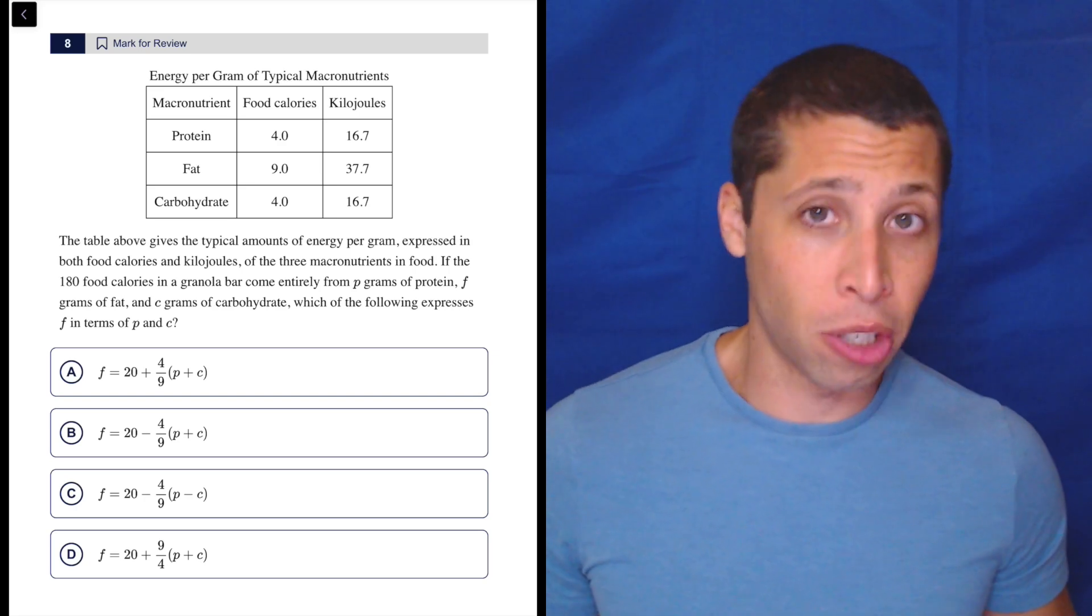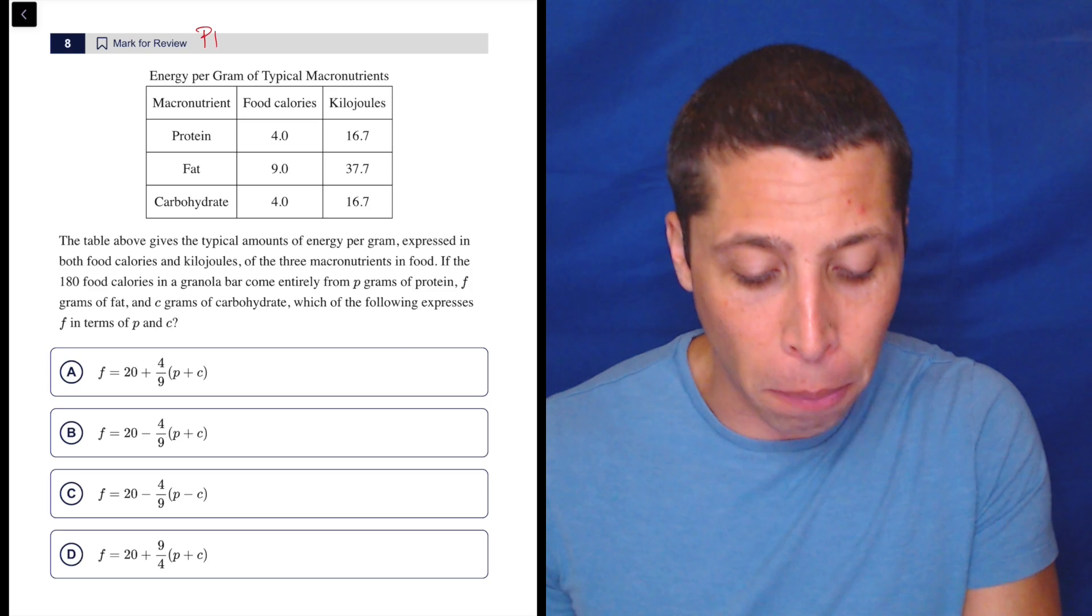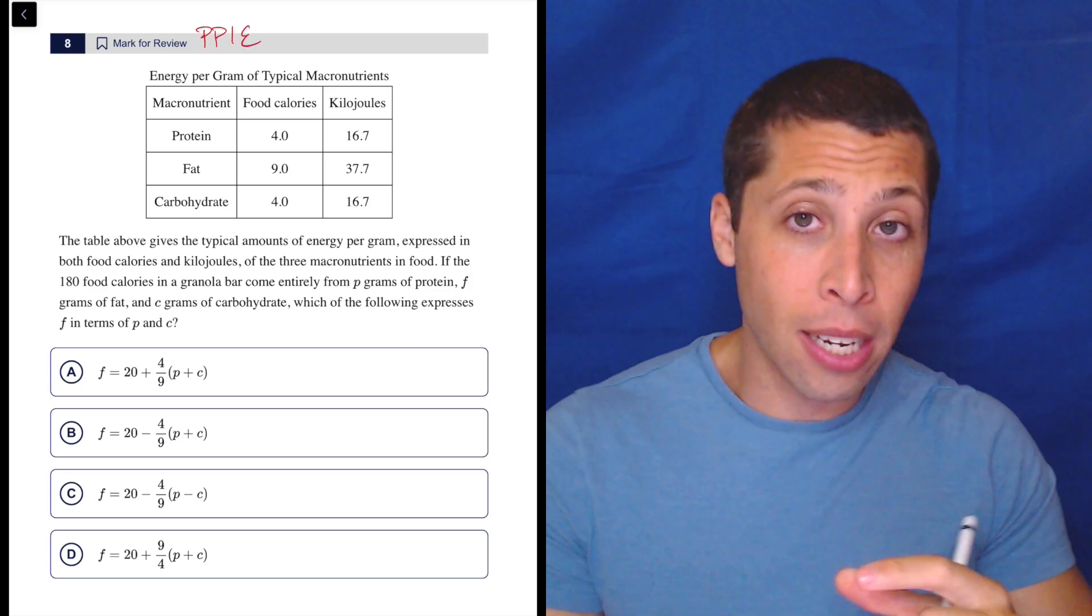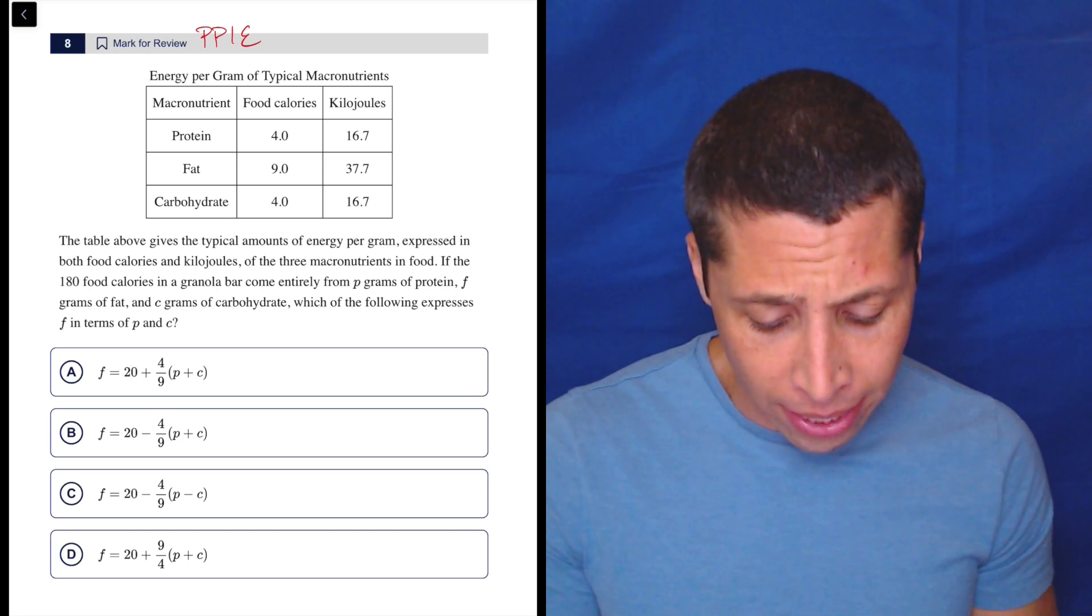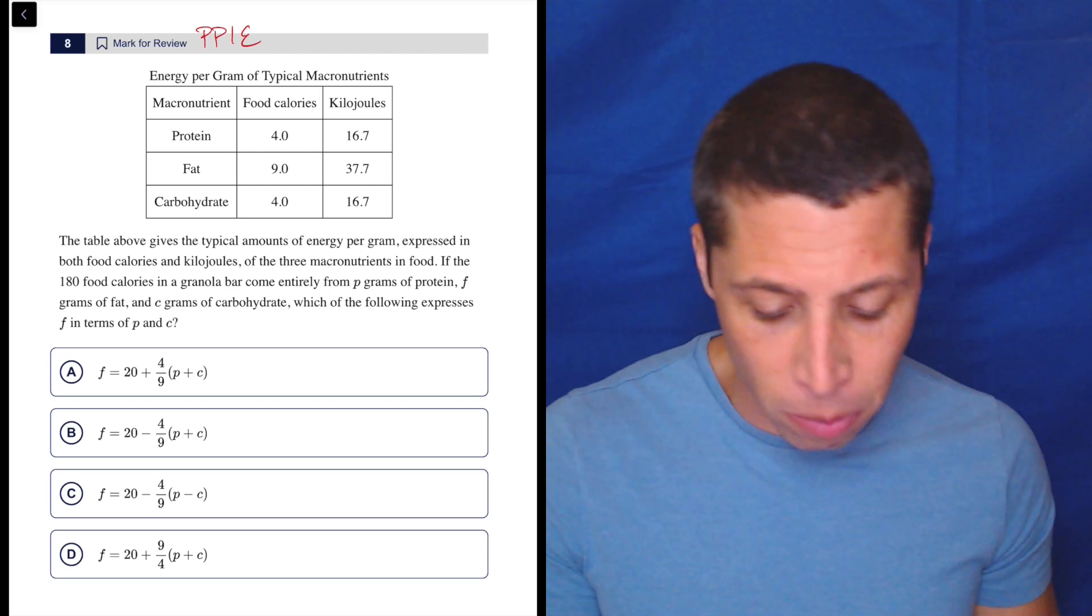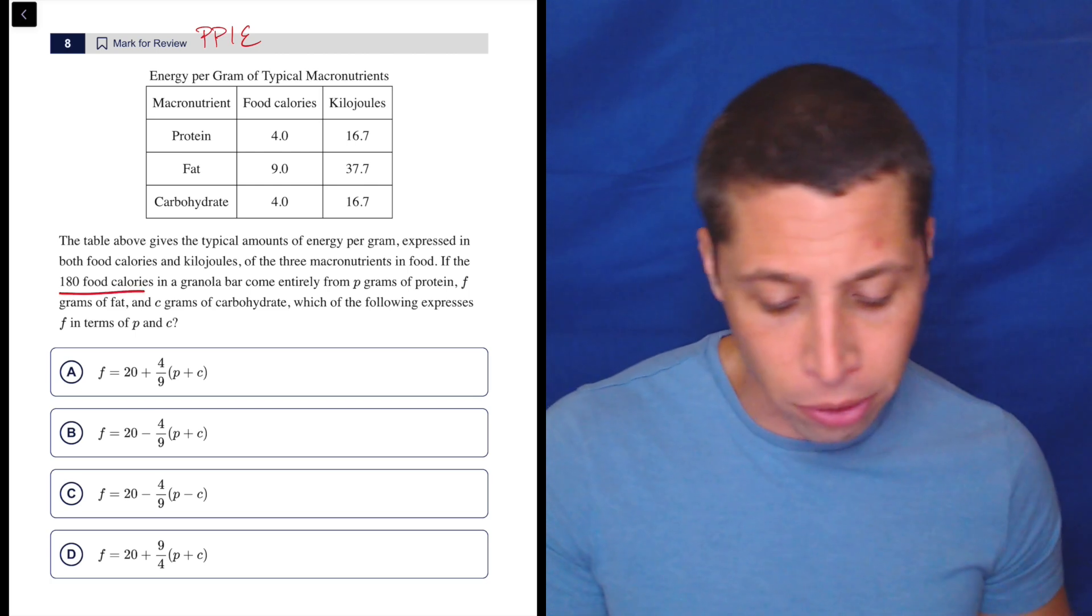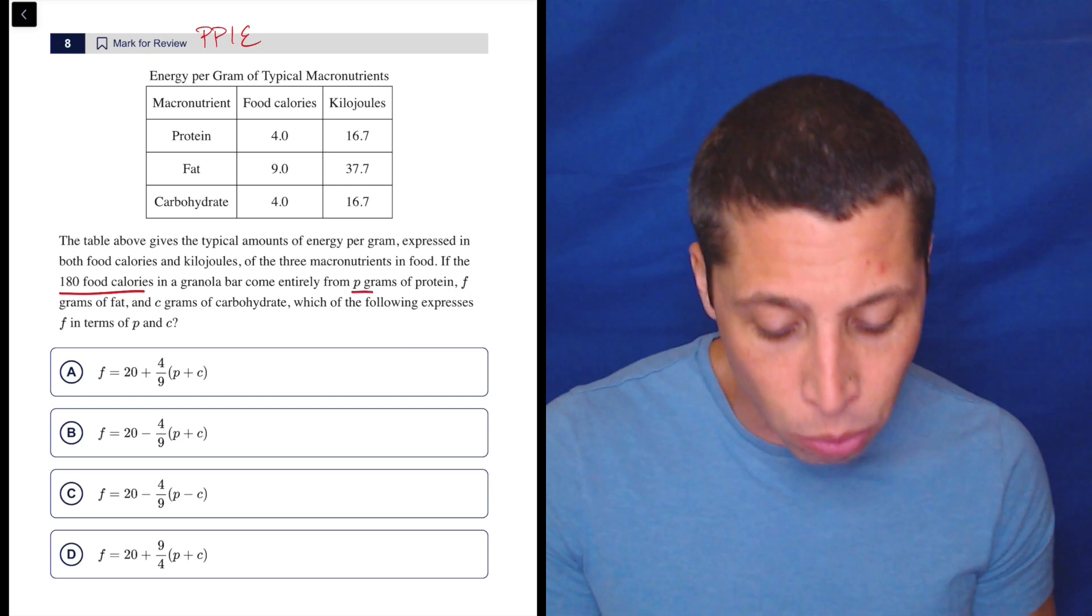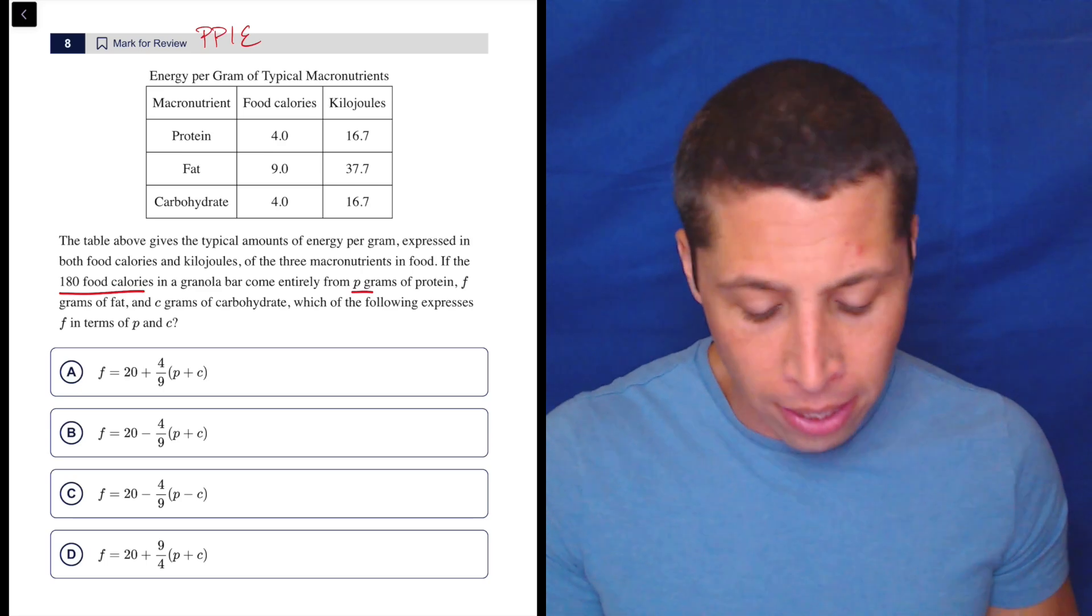So we're going to use the same strategy we always use. We have equations in the choices. So I would love to have some points, right? So plug points into equations. The challenge here is understanding what the points should be. So to kind of help you with that, let's think about what they're telling us. The table shows the typical amounts of energy per gram expressed in both food calories and kilojoules of the three macronutrients in food. If the 180 food calories in a granola bar come entirely from P grams of protein, F grams of fat, and C grams of carbohydrates, which the following expresses F in terms of P and C.